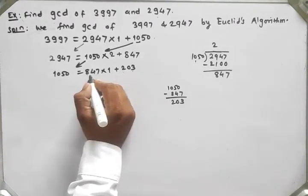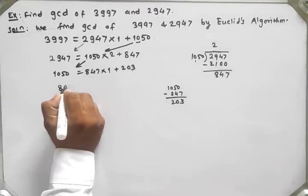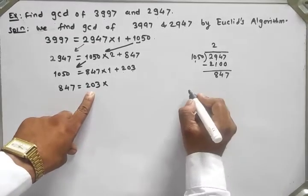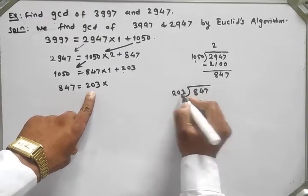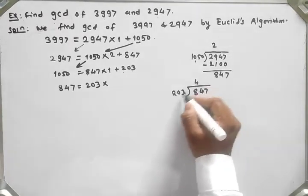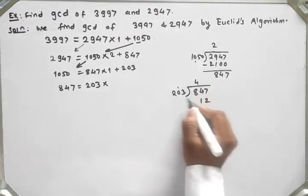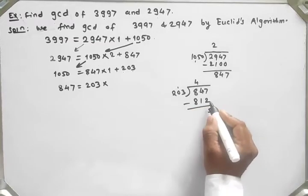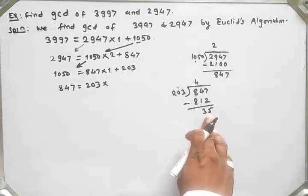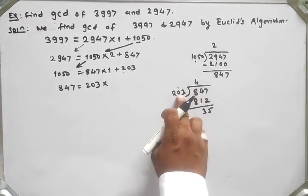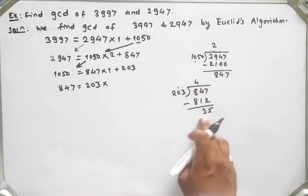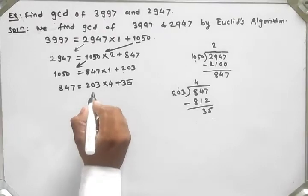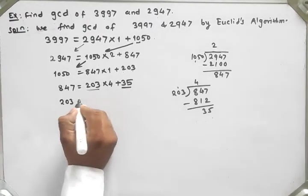We divide 847 by 203. If I take quotient 4, the multiplication is 812. The subtraction gives remainder 35. The condition requires 0 ≤ remainder < divisor, i.e., 0 ≤ 35 < 203, which is satisfied. So quotient is 4 and remainder is 35.